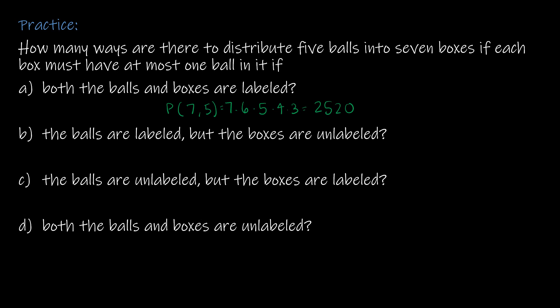For part B: the balls are labeled but the boxes are unlabeled. Since the boxes are identical, it doesn't matter which box a ball goes into — swapping box labels gives the same result. So there is just one way to distribute them.